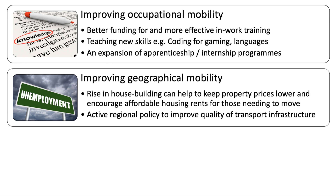Improving geographical mobility is also really key. Can we make housing more affordable? Can we increase the number of new homes being built for rent and to buy, keeping property prices and rents lower for those who need to move to find work? Can we improve the quality, reliability, and cost of transport infrastructure, including inner-city transport and better hub-and-spoke networks using bus, light rail, and rail systems?